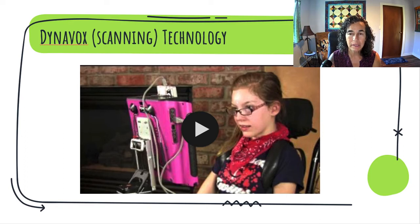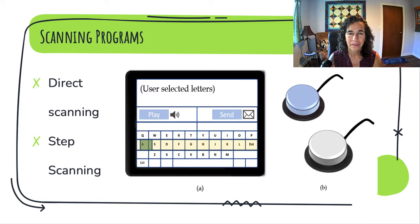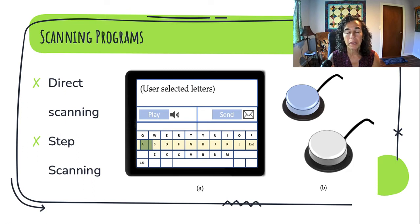Dynavox scanning is another type of high-level scanning for a child. It uses a head mouse, and sometimes there's even just a head dot that kids can use — if they have some head movement, they can do scanning as well. We also have scanning programs: either direct scanning or step scanning. In direct scanning, all the options are present on the screen and the client either points with a finger, body part, or assisted device to make a choice.